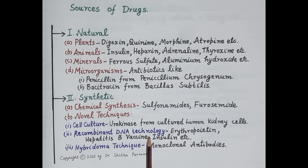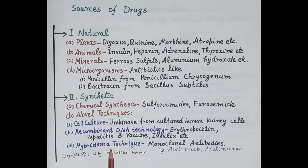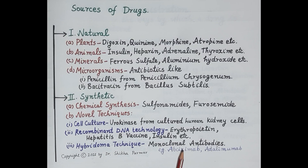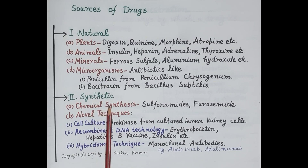Another new and highly specialized technique to produce drugs like monoclonal antibodies is the hybridoma technique. Monoclonal antibodies are identical antibodies — for example, abciximab, which inhibits platelet aggregation, and adalimumab, which is used in the treatment of rheumatoid arthritis. So this is in brief on natural and synthetic sources of drugs.